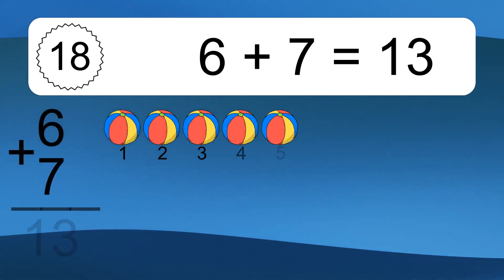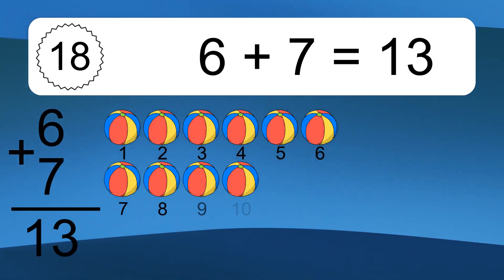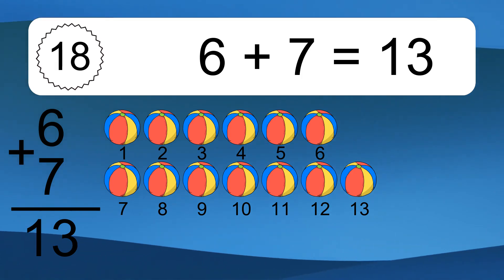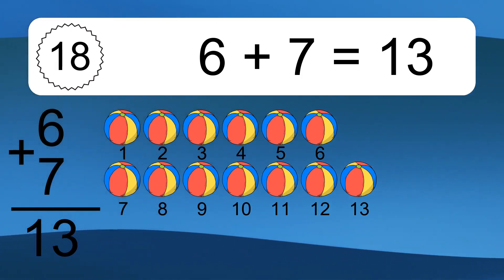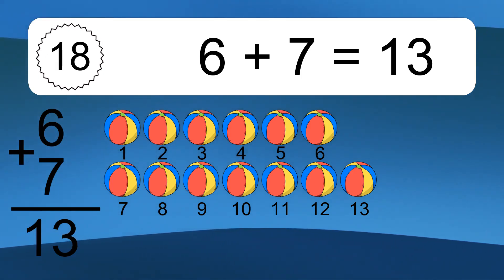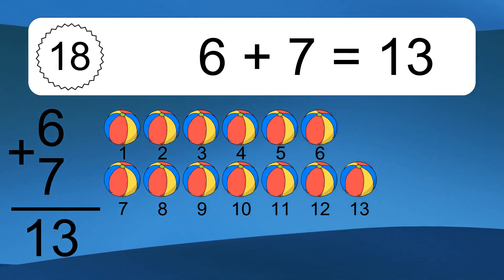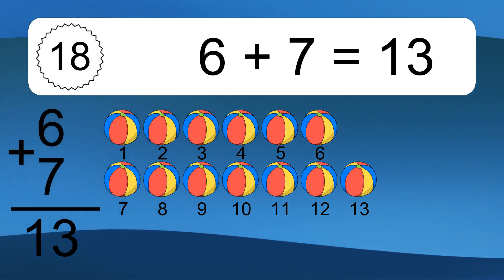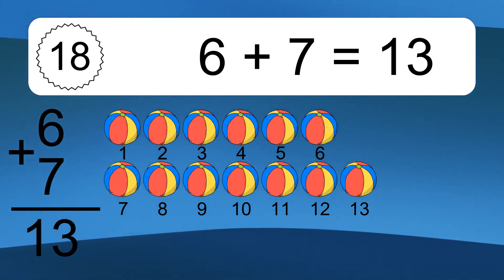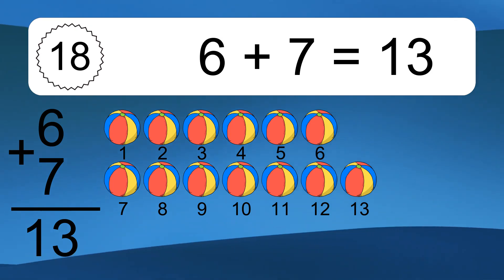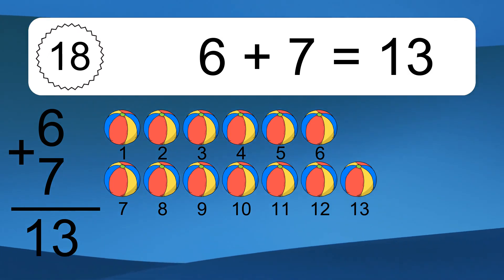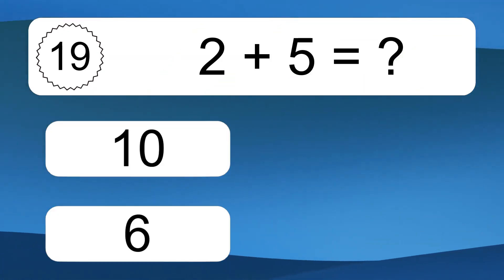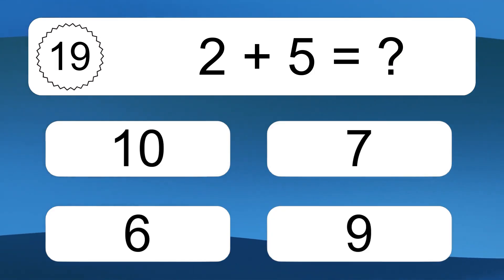6 plus 7 equals 13. Let's count it. 1, 2, 3, 4, 5, 6, 7, 8, 9, 10, 11, 12, 13.